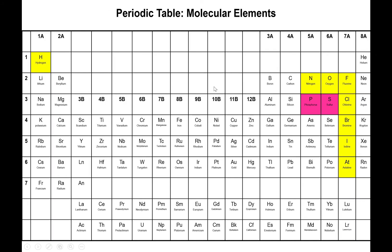Looking at the periodic table, there is a handful of elements you need to be aware of: specifically hydrogen, nitrogen, oxygen, fluorine, chlorine, bromine, iodine — and I'm including astatine, phosphorus, and sulfur in this discussion. The ones in yellow are the most important. These elements, when present by themselves, are actually present as molecules — we call these diatomic molecules: H₂, N₂, O₂, F₂, Cl₂, Br₂, I₂.